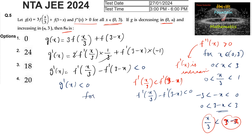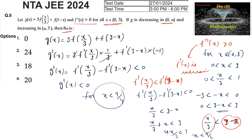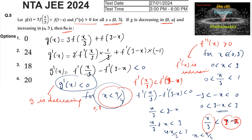We need x/3 < 3-x, that is x/3 + x < 3, which gives 4x/3 < 3, or x < 9/4. So g'(x) < 0 for x < 9/4, meaning g is decreasing on (0, 9/4). Therefore α = 9/4.